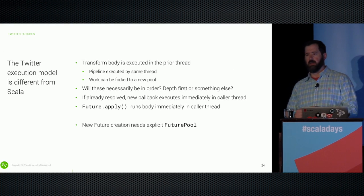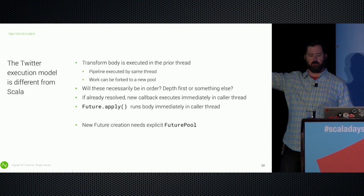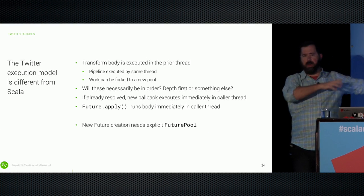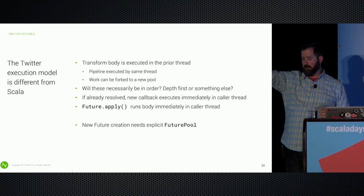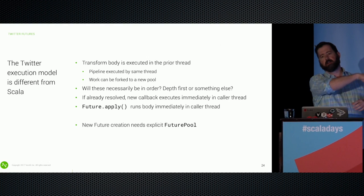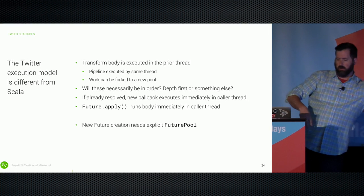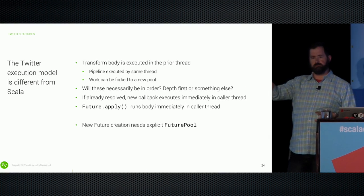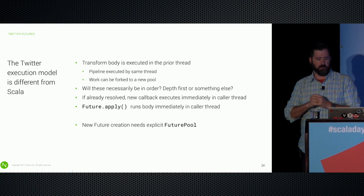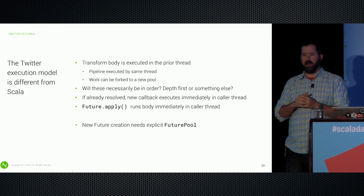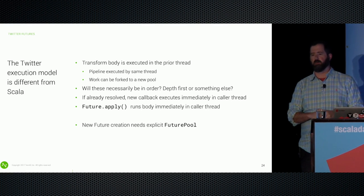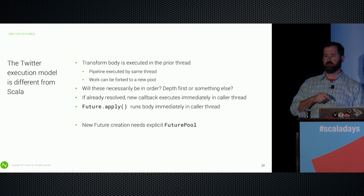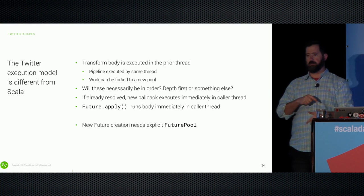Twitter's execution model is different from Scala's. The transform bodies are executed in the thread that resolves the prior future. So if we set up a pipeline with maps and flatMaps, once one thread resolves a future, that same thread executes the callbacks for the subsequent chained future, and so on. One gotcha: if a future is already resolved when you add a callback to it, that callback will immediately execute in your calling thread, not in the thread of the future.